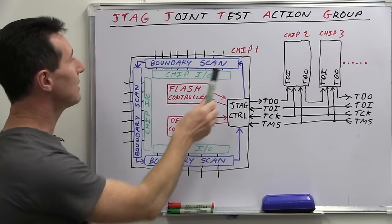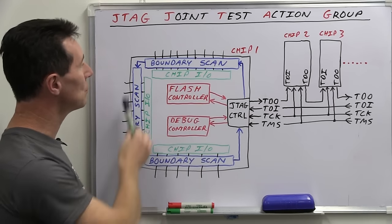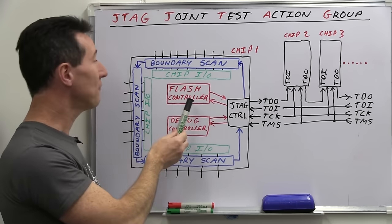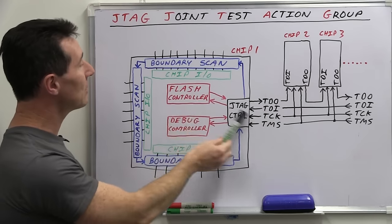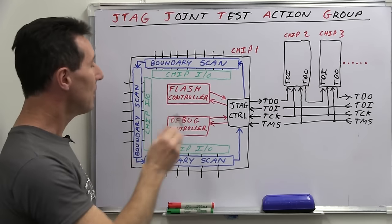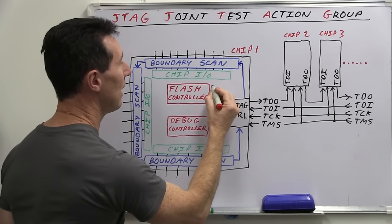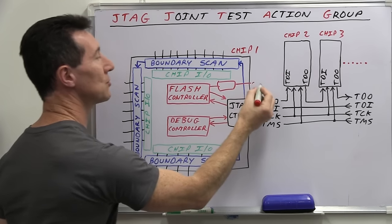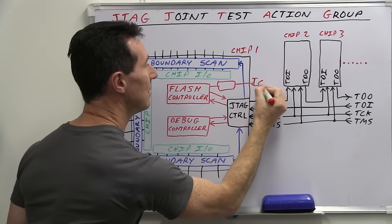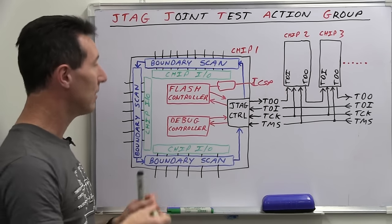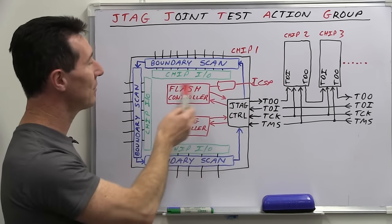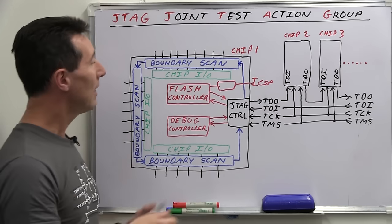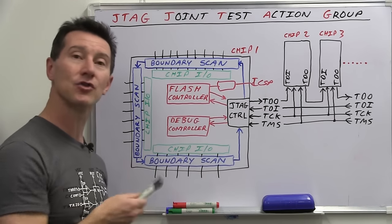Not only will it contain your traditional boundary scan around here, which we'll talk about, but it is also used as the interface where you can program your flash memory built in. So it's going to talk to the flash controller built in. And that microcontroller may also have another block in here, which then goes out to your traditional ICSP, your in-circuit serial programming method.